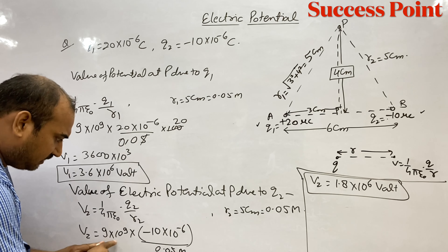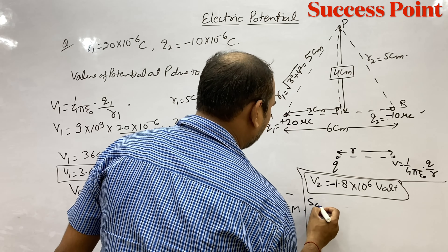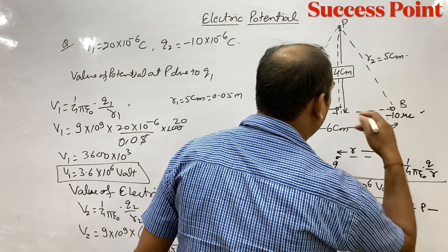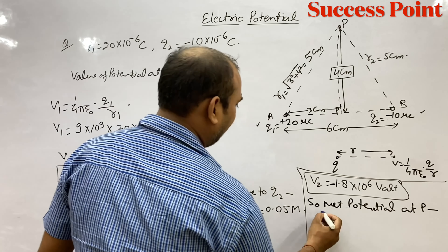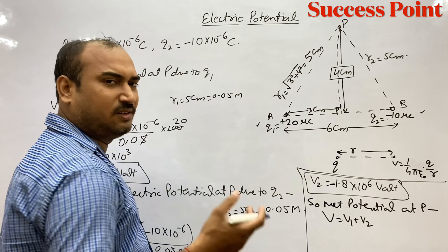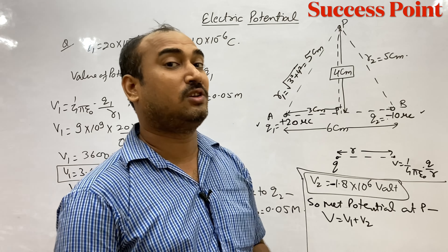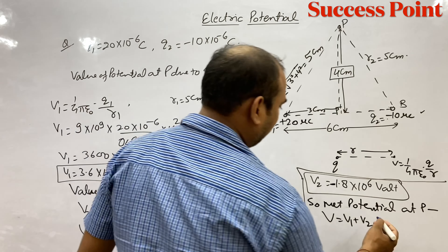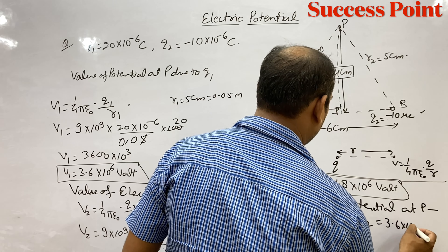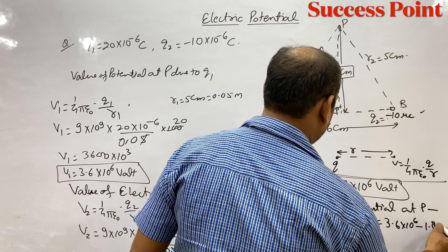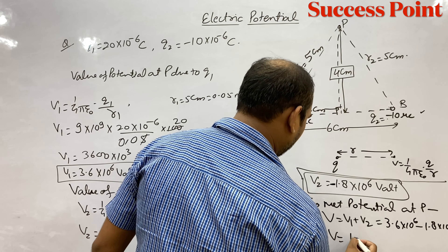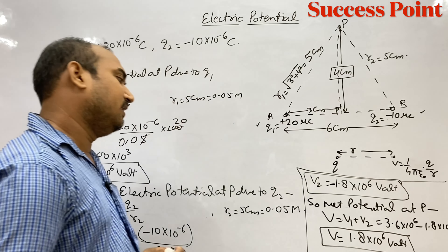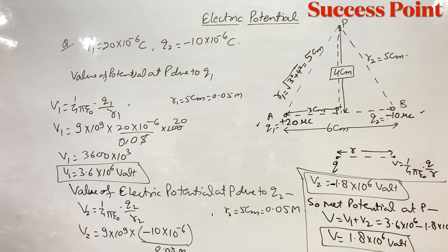Net potential at P nikalna hai. Aapko pata hai net potential mein: V = V1 + V2. Electric potential scalar hone ki wajah se net potential mein direction ka koi issue nahi, simple V = V1 + V2. So V = 3.6 into 10⁶ + (minus 1.8 into 10⁶) = 1.8 into 10⁶ volt. Hamara answer aa gaya: P pe potential 1.8 into 10⁶ volt. Ise fatafat note kar lo bacho.